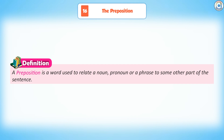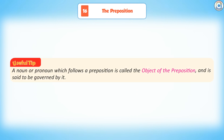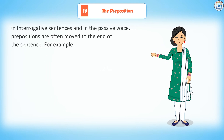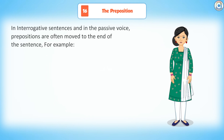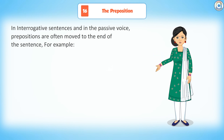Definition: A preposition is a word used to relate a noun, pronoun, or a phrase to some other part of the sentence. Useful tip: A noun or pronoun which follows a preposition is called the object of the preposition and is said to be governed by it. In interrogative sentences and in the passive voice, prepositions are often moved to the end of the sentence.